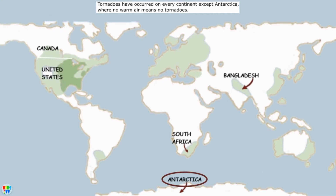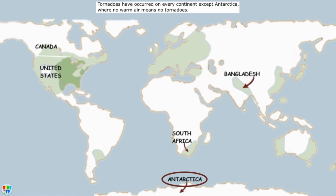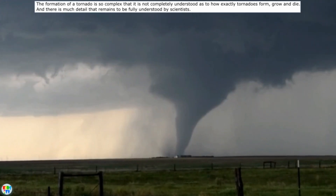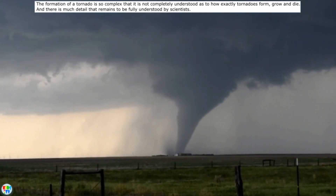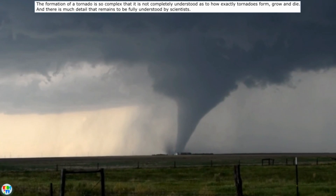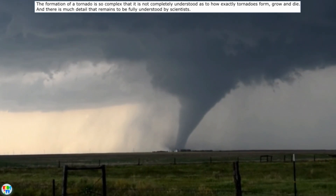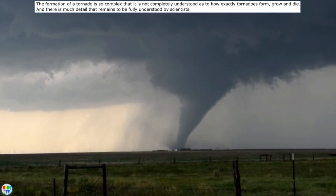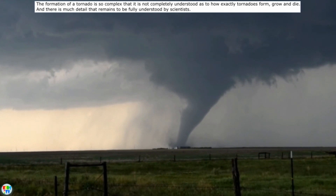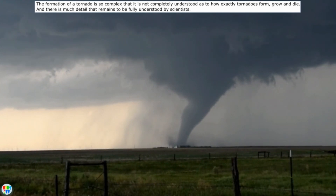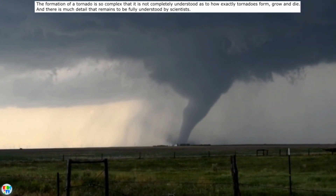Tornadoes have occurred on every continent except Antarctica, where no warm air means no tornadoes. The formation of a tornado is so complex that it is not completely understood — how exactly tornadoes form, grow, and die remains to be fully understood by scientists.